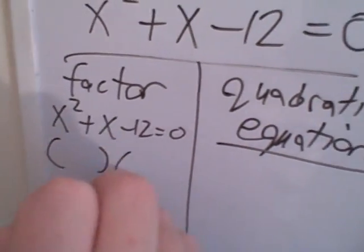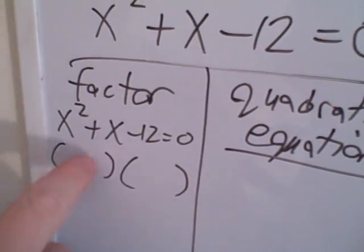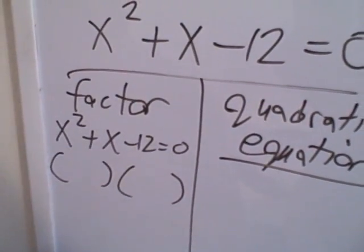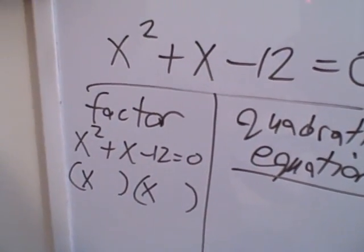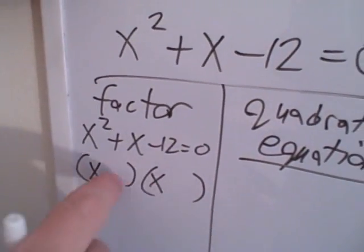But basically I have two binomials that when I multiply them together, I should get that. I know how to do this off the top of my head. You do x and x in the first spot. And now you need two numbers in the second spot.